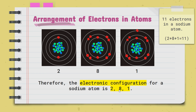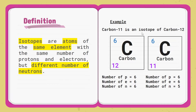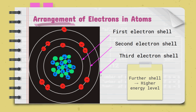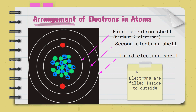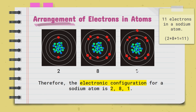There are 11 electrons in a sodium atom. So 2 plus 8 is 10, and we still have one more electron to go, so there is one electron in the outermost shell. There are three shells in total. This outermost shell is called the valence shell or the valence electron shell. So this third electron shell in this case is the valence electron shell. Any electrons in the valence electron shell or the outermost electrons are called valence electrons.